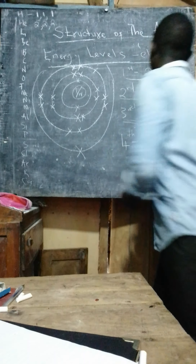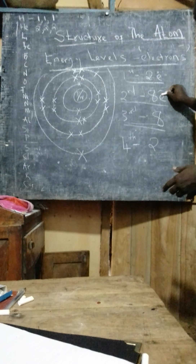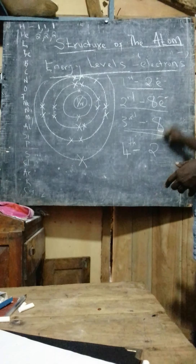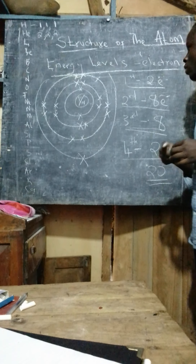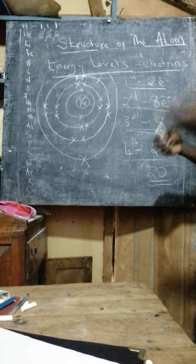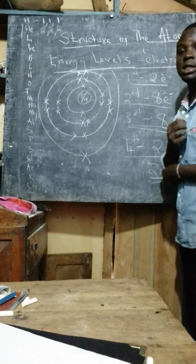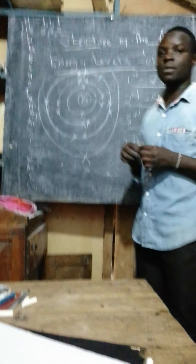The same applies to the third energy level — it will also have a maximum of eight electrons. So if you have an atom with 18 electrons, you draw the first energy level and put two. You are remaining with 16. In the second energy level, put eight. You are remaining with another eight, so you draw another energy level. Each and every energy level has its specific number of electrons that it can carry.